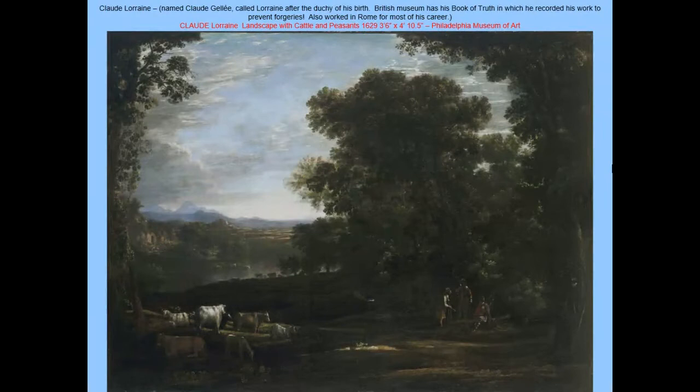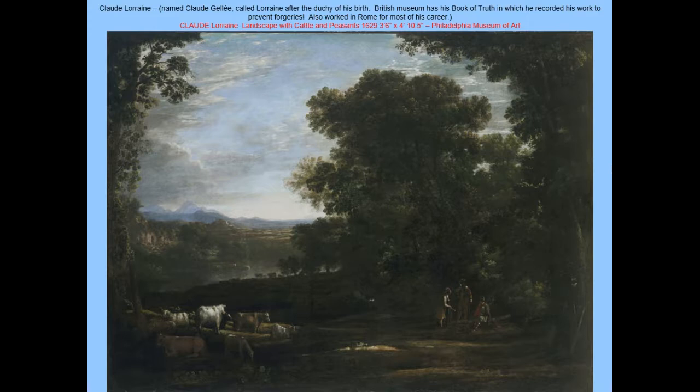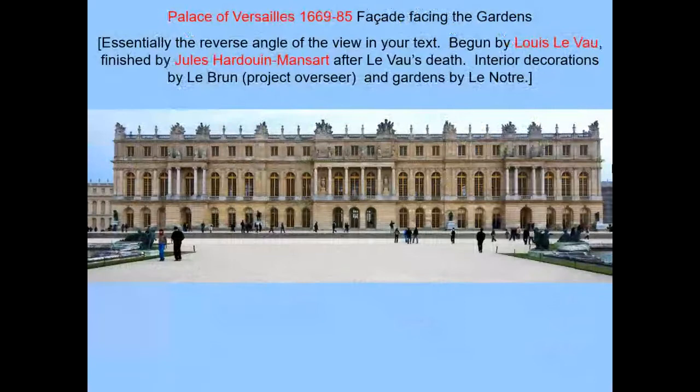Claude Lorrain gets his fame from incredibly beautiful landscapes that very frequently contain small narratives of biblical or mythological events — making them history paintings and thus more acceptable to the academy. One example goes the opposite way: it's just a landscape with peasants and cattle, which is a remarkable subject to see in the Baroque — a little break from the hierarchy of history painting.